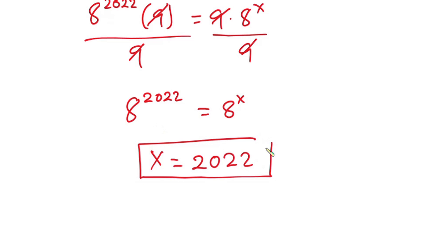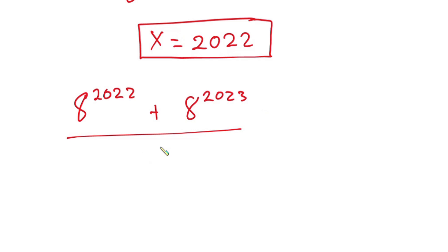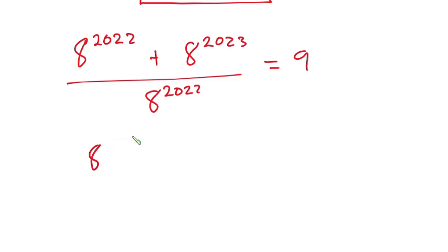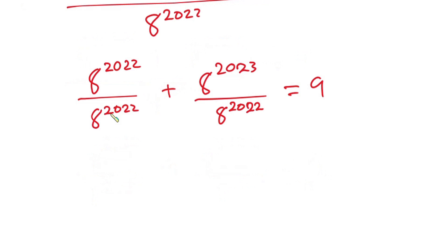Now let's plug this back into the original equation to verify it satisfies the equation. We have a to the power 2022 plus a to the power 2023, all over a to the power x where x is 2022, and this must equal 9. I'll split the fraction: a to the power 2022 over a to the power 2022, plus a to the power 2023 over a to the power 2022, and this must equal 9.